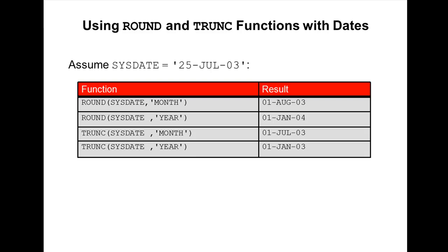Now ROUND and TRUNCATE functions with dates. Assume today's date is 25th July 2003. When you use the ROUND function, since 25th is close to the next month, you get 1st August. Rounding by year: since July is the 7th month — past June the 6th month — you get the first day of the next year, so 01-January-2004. For TRUNCATE by month: July is the 7th month, so truncation gives 01-July-2003. Truncating by year gives 01-January-2003, because it uses truncate, not round.